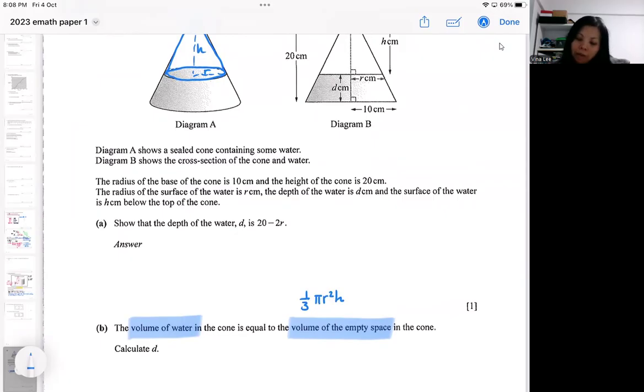So that will be the empty space. However, just now in my previous similar triangle, I have h equal to 2r. So I actually can put it inside. So if I have put it inside, I will get 2 third pi r cubed. So that is actually the volume of the empty space. So I've gotten the volume of the empty space.